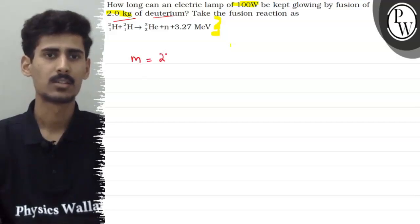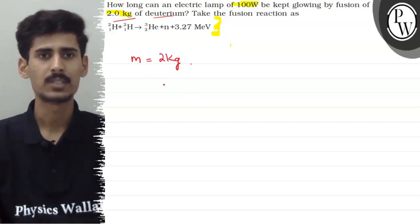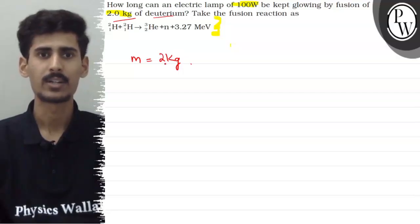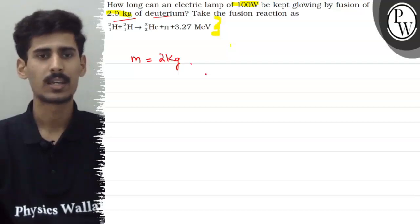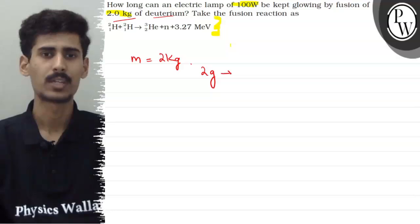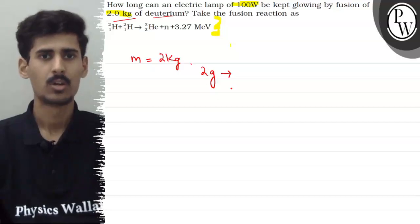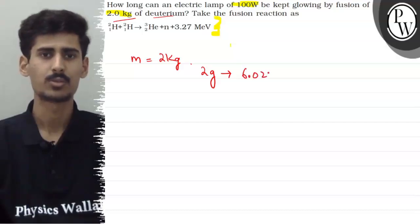Our given mass is 2 kg. If we see our 2 kg of deuterium, the number of atoms is how many? First, we will see that our 2 grams of deuterium is 1 mole of deuterium. The mass of 1 mole of deuterium is 2 grams, or in 2 grams of deuterium the number of atoms present is 6.022 into 10 raise to the power 23 atoms.